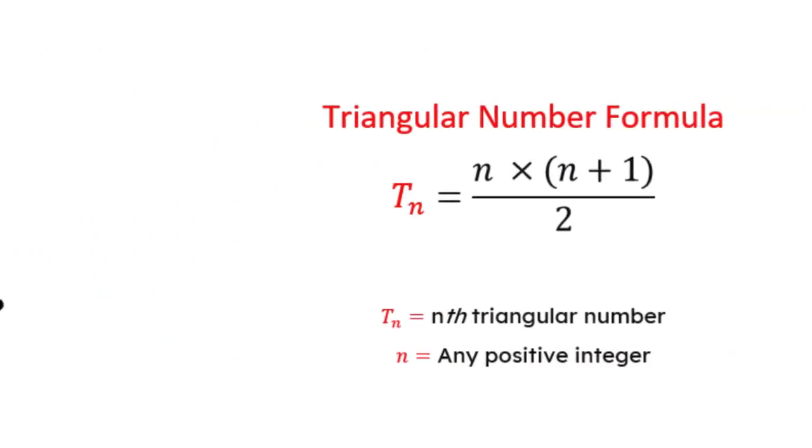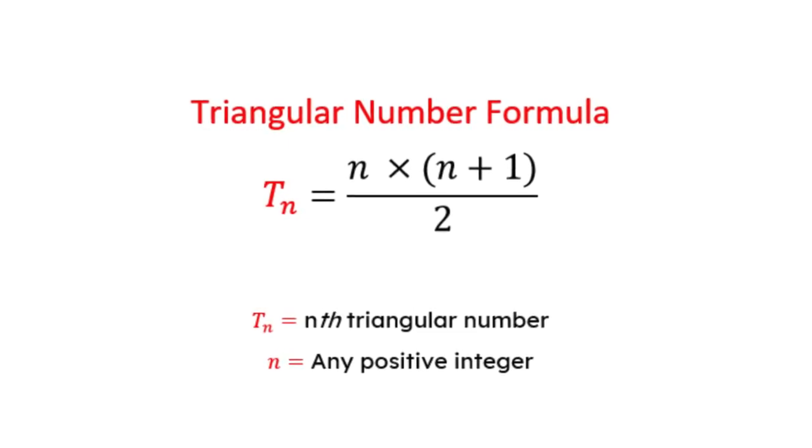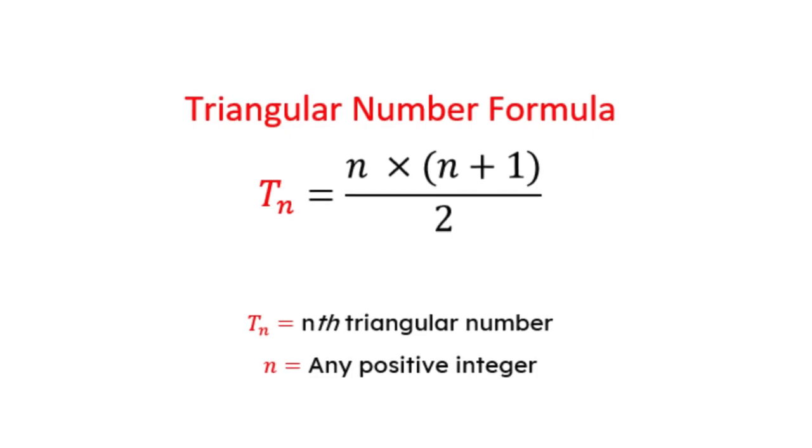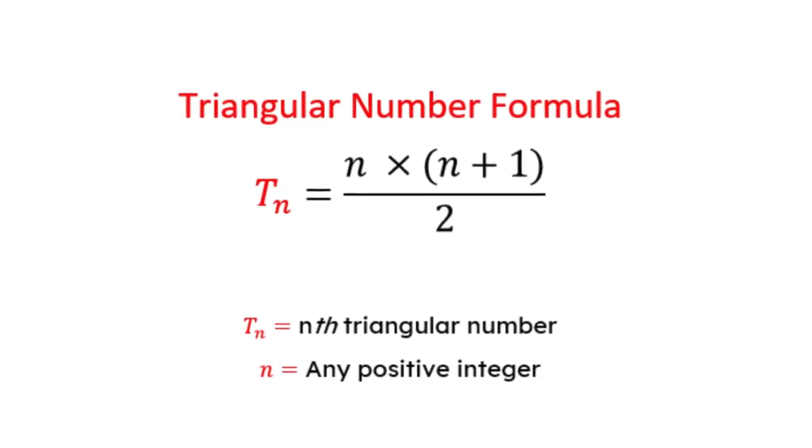To find the nth triangular number we use the formula Tn is equal to n times n plus 1 divided by 2.